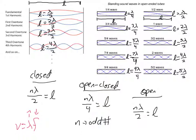Comparing closed and open pipes: both closed-closed and open-open follow the same principles. With organ pipes, a vast majority are open on both sides, because you can hit every single harmonic and get more possibilities for notes on the same pipe. But the really low ones always use closed on one side, open on the other, because the wavelength formed is four times as long as the pipe — since it's one-quarter of a wavelength. So you get a much longer wavelength from a shorter pipe, meaning a lower frequency.